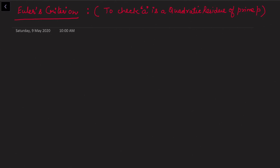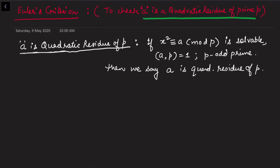In this video I will be discussing Euler's criteria, which speaks about when we can say that a is a quadratic residue of prime p. Before starting Euler's criteria, let me recall what a quadratic residue is. a is a quadratic residue of p if the congruence x² ≡ a (mod p) is solvable, where gcd(a, p) = 1 and p is an odd prime.